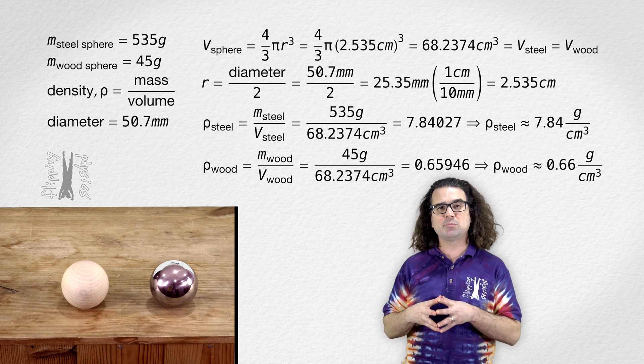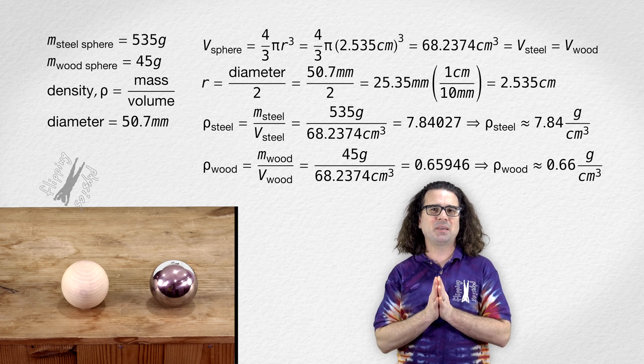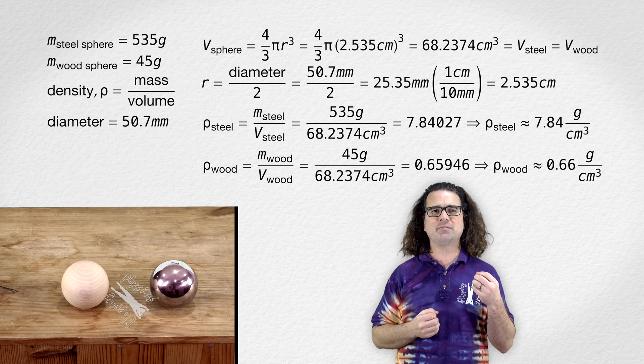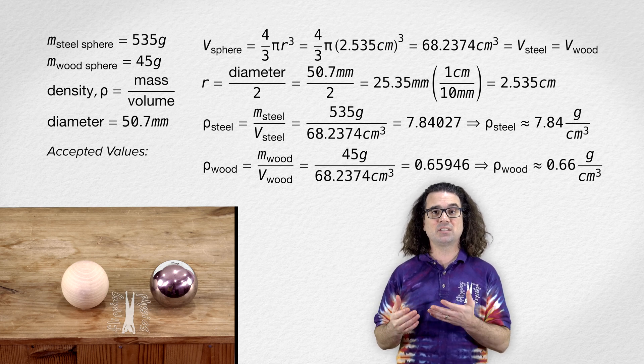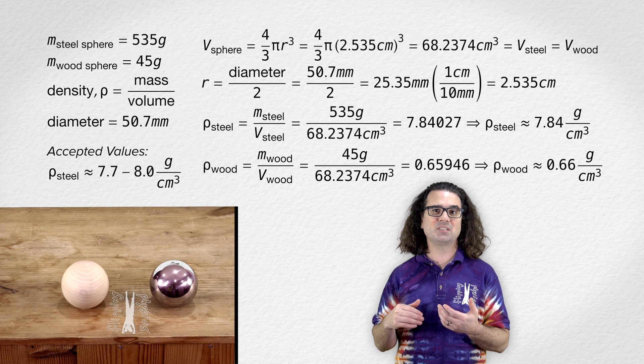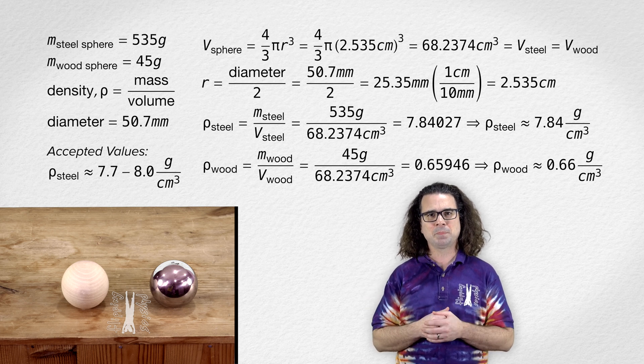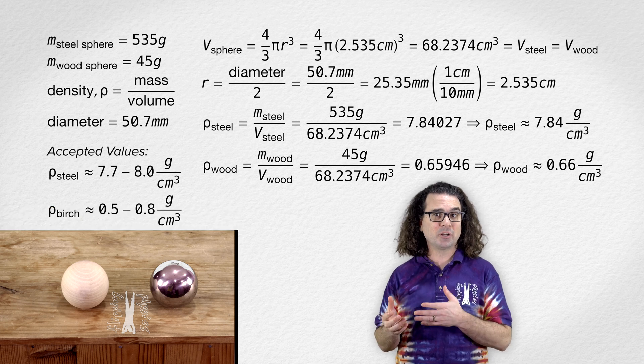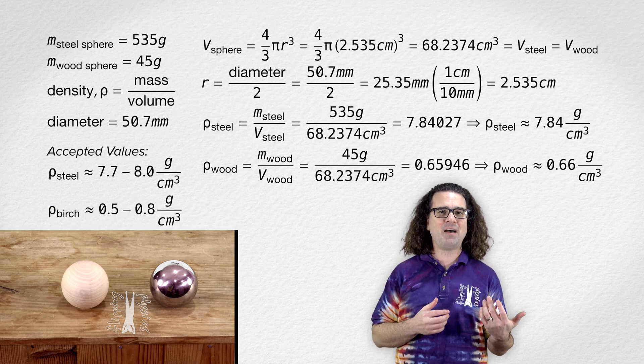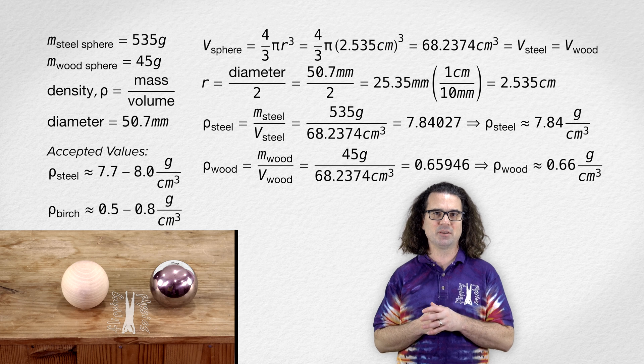Now, both of these observed values for density make sense because they are within the range of the accepted values for those densities. The accepted value for the density of steel is roughly 7.7 to 8.0 grams per centimeter cubed. And the accepted value for the density of this type of wood, which is birch, is in the range of 0.5 to 0.8 grams per centimeter cubed.